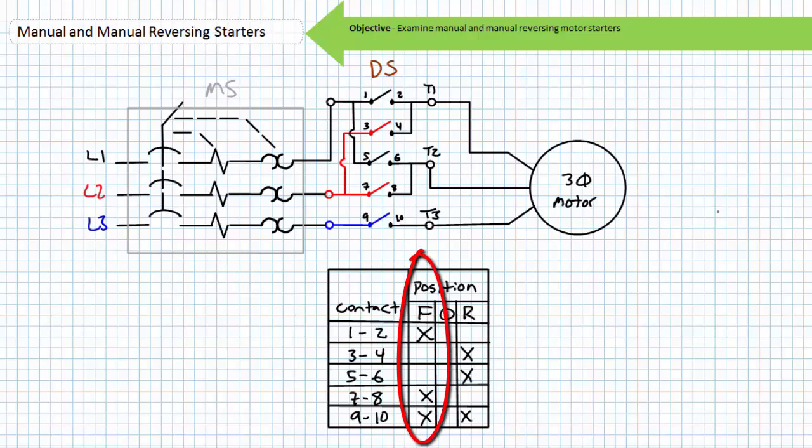When the drum switch is in the forward position and the motor starter is closed, the target table illustrates that the phase sequence seen by the stator is L1, L2, L3. Let's say this rotates the motor clockwise for this particular application. However, when the drum switch is in the reverse position and the motor starter is closed, the target table illustrates the phase sequence seen by the stator is L2, L1, L3. This would see the motor rotate counterclockwise.